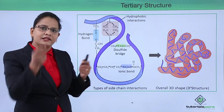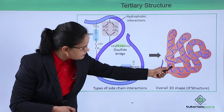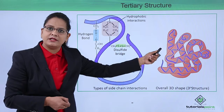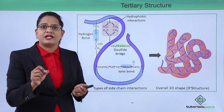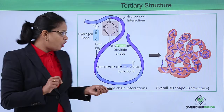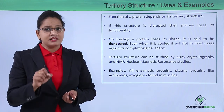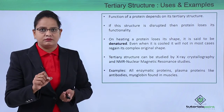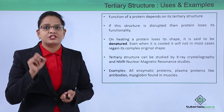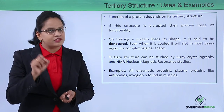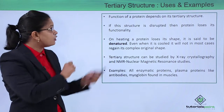The secondary structures — that is, the alpha helix and the beta pleated sheet — undergo folding, as you can see, and form a three-dimensional structure. All of us know that folding is responsible for function; a protein is functional only in its tertiary structure, with the exception of insulin as we studied.